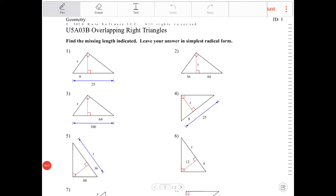Hello, students. In this video, I will go through exercise U5A03B, where I will be solving for sides of overlapping right triangles. The instructions for this assignment say find the missing length indicated, leave your answer in simplest radical form. I will work on just the even questions here, because in the lesson I've specified that you guys answer the odd questions. So you're going to use the even questions as a model.